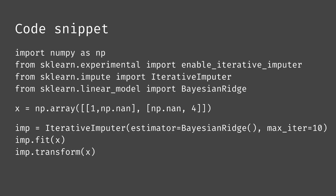This is the code snippet. First we need to import NumPy. There are two key library imports: one is to enable the iterative imputer via `enable_iterative_imputer`, and then we import `IterativeImputer`. Finally we import `BayesianRidge` since that's the estimator shown in the code. The method is exactly the same as before — we initialize `imp` with `IterativeImputer`, then call fit and then transform. Now let's get into Jupyter Notebook.